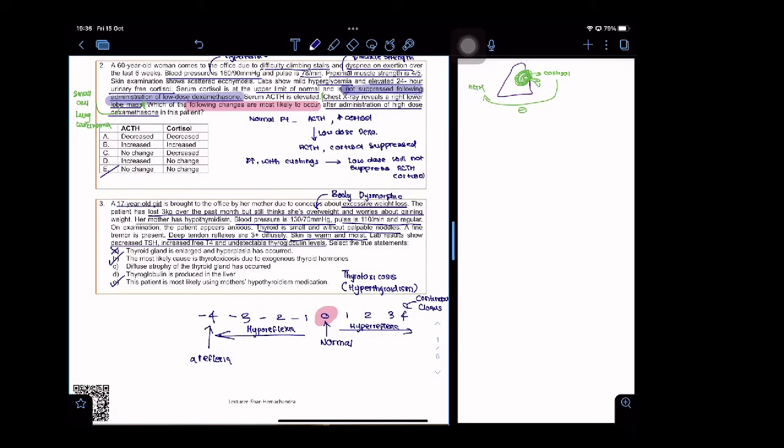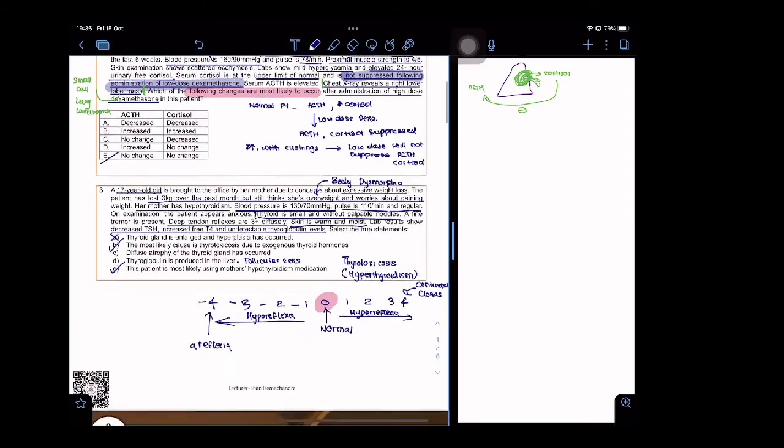Diffuse atrophy of the thyroid gland has occurred - that is what this says. But let's go to a more biochemical level. Thyroglobulin is produced in the liver, is that correct? Where is thyroglobulin produced? Yeah, it's produced in the thyroid gland in the follicular cells. This is the thing that binds the T3, T4 molecule in the colloid and it is produced by the follicular cells. This is wrong. Now let's take a deeper look into this case.